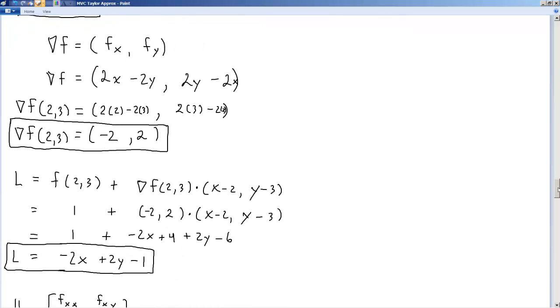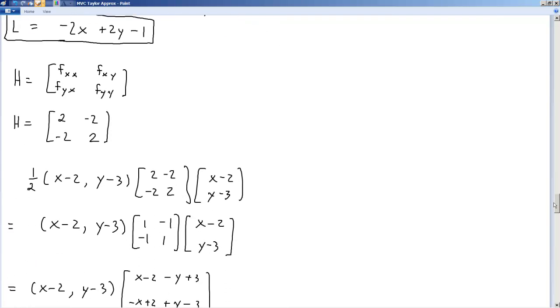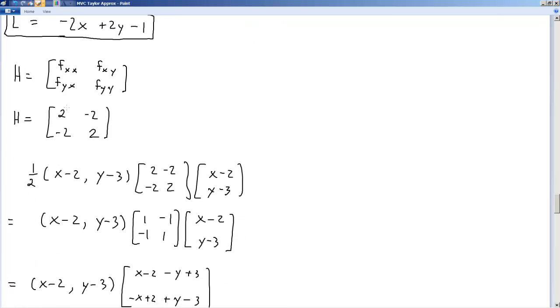We can get an exact approximation by taking this matrix of partial derivatives. It's just numbers. There's nothing to evaluate it at.